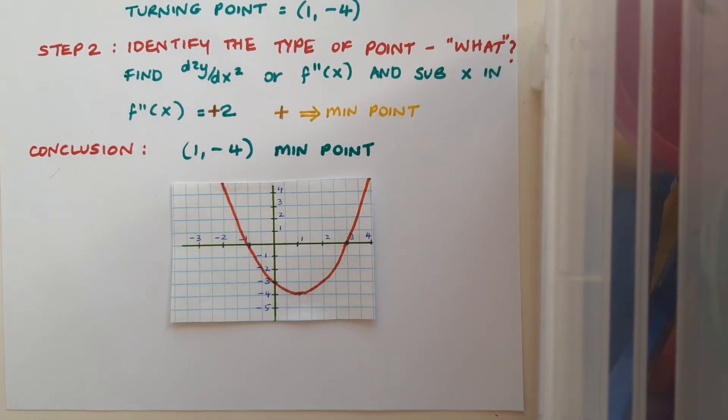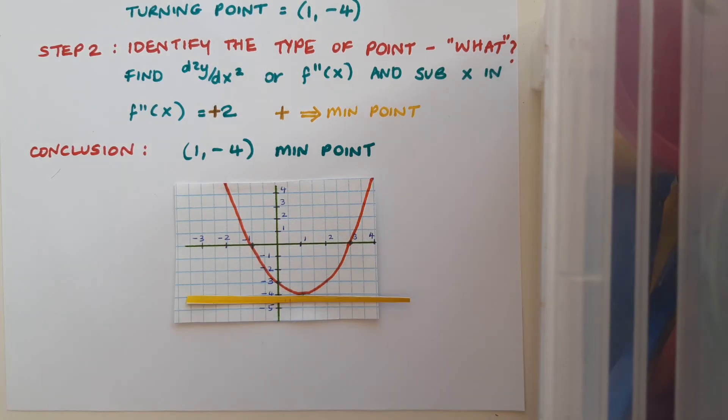This graph is actually the graph of the function in this question. You can see that it's got a minimum point at the point (1, -4). Here's the tangent put in. You can see the tangent is horizontal at this point, so it had a slope of 0. That's why our f'(x) = 0 was used in step 1 of the question.